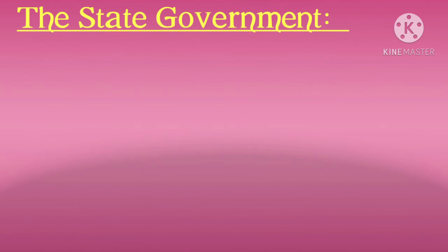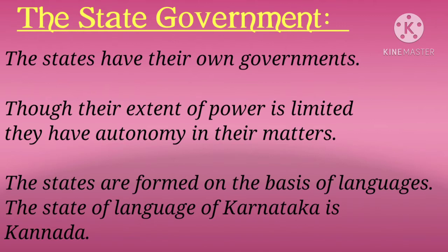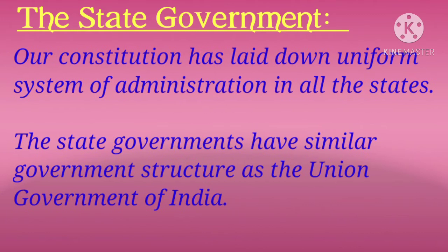We have finished the Union Government. Now let us move on to the State Government. The States have their own governments. Though their extent of power is limited, they have autonomy in their matters. The States are formed on the basis of languages — the State Language of Karnataka is Kannada. Our Constitution has laid down a uniform system of administration in all the states, and State Governments have a similar government structure as the Union Government of India.